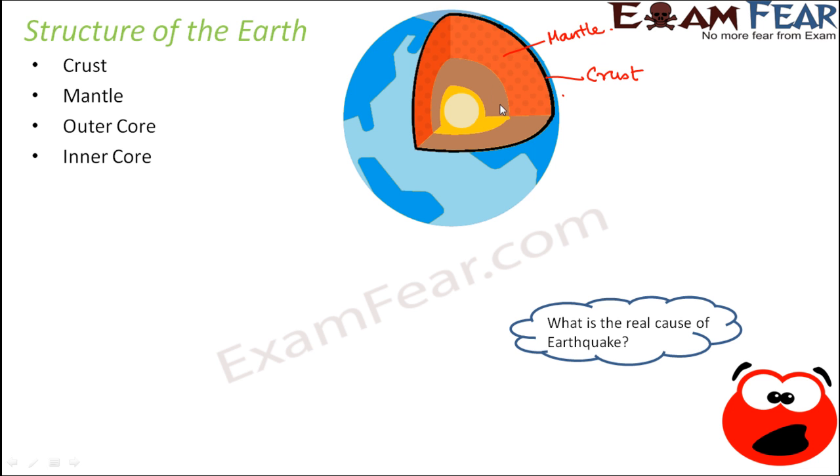Inside this you have the outer core. This is outer core, and the innermost one is the inner core. So these are the four major layers which are present within the earth.